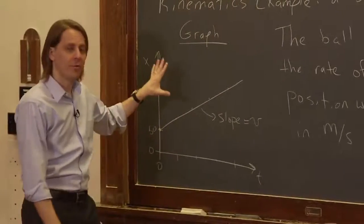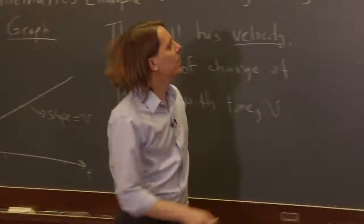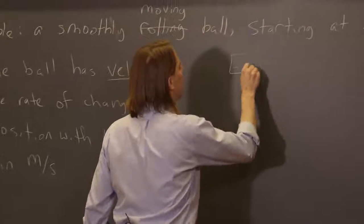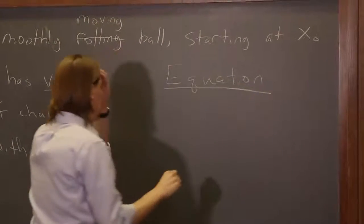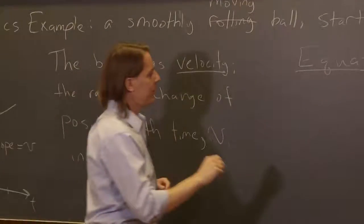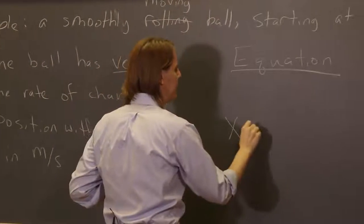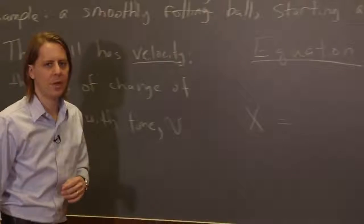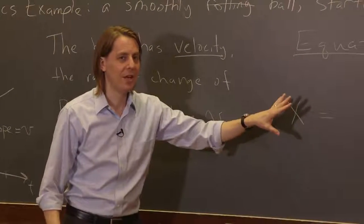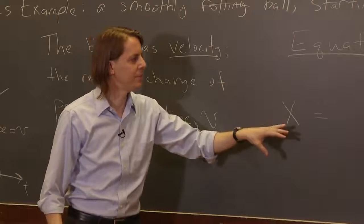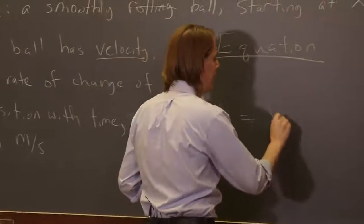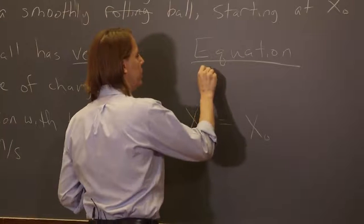So that's the graph. Now let's look at the equation. The equation looks something like this. We're doing kinematics, so we want to describe the position. Again, the x on the left of the equal sign is a function of time. We're describing the position as a function of time.